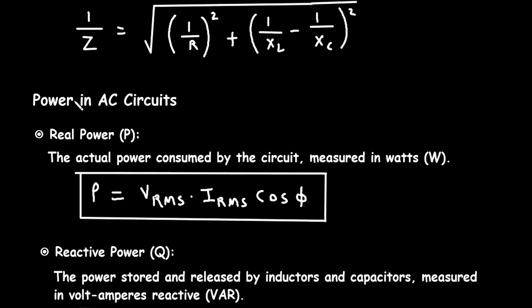Next is power in AC circuits. Number one: real power, represented by P. This is the actual power consumed by the circuit, measured in watts (W). The formula is P = Vrms × Irms × cos φ.